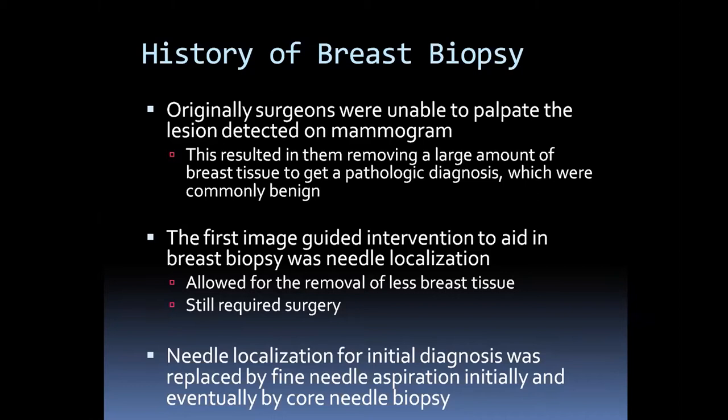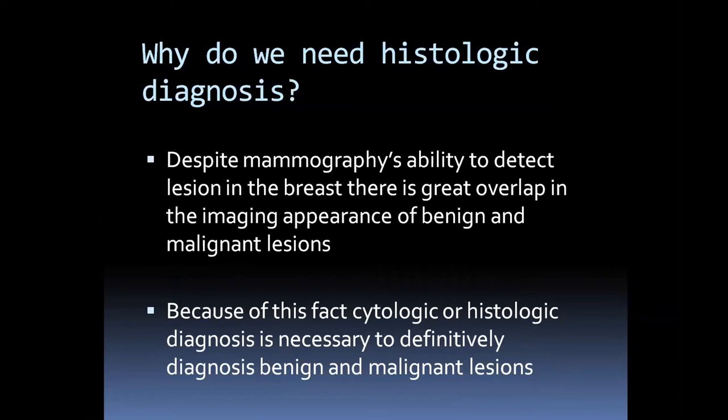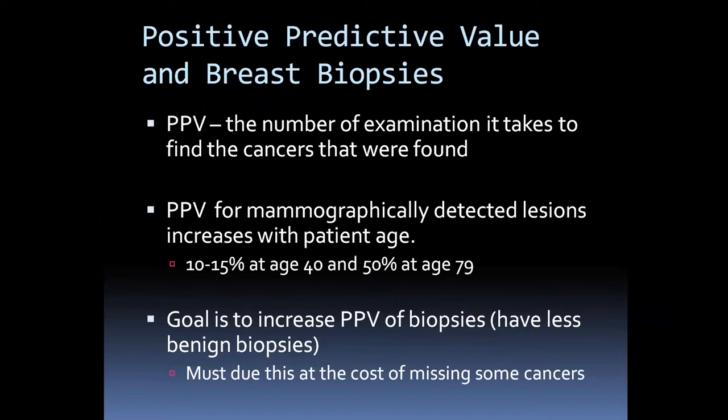Needle localizations were the initial diagnostic approach for a while, but were replaced by fine needle aspiration and eventually by core biopsy. We need histologic diagnosis because despite mammography's ability to detect lesions, there is great overlap in the imaging appearance of benign and malignant lesions. Because of this, we need cytology or histology to make the definitive diagnosis of benign or malignant.